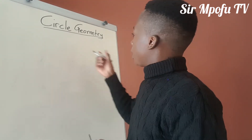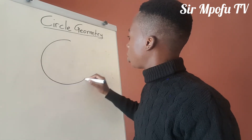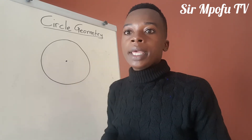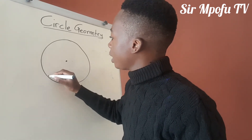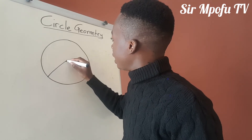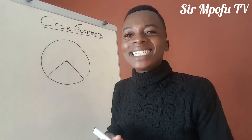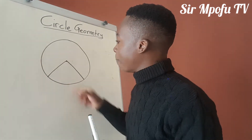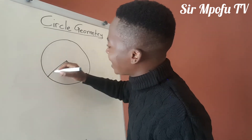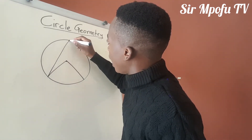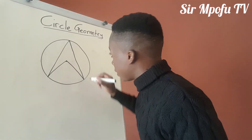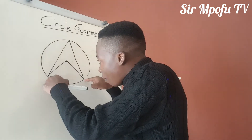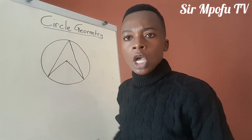Theorem 2: the angle subtended by an arc at the center is twice the angle subtended by that same arc at the circumference. Let me repeat: the angle subtended by an arc at the center is twice the angle subtended by that same arc at the circumference. So what does that mean? It means if you have 100 degrees at the center, the angle at the circumference is going to be 50.